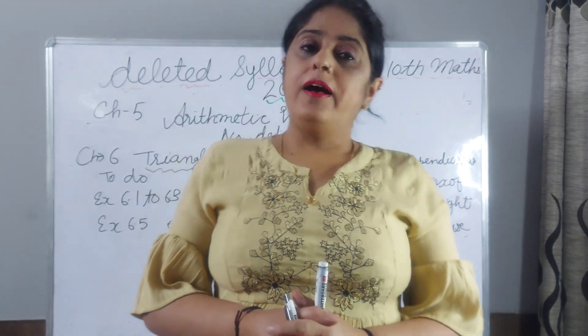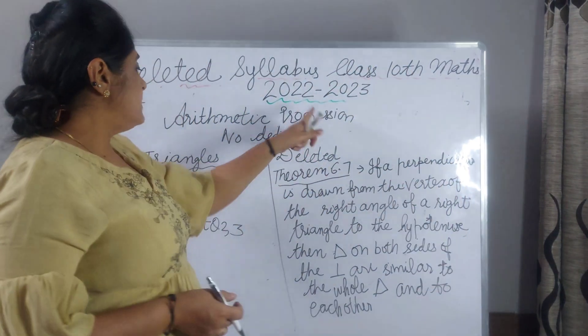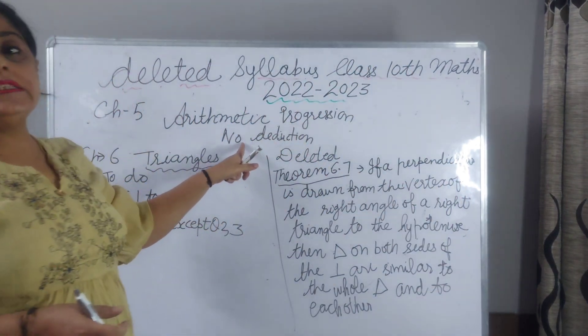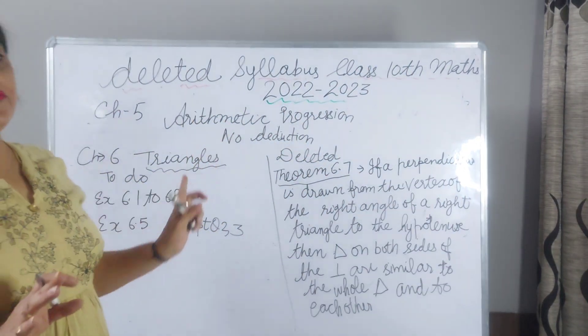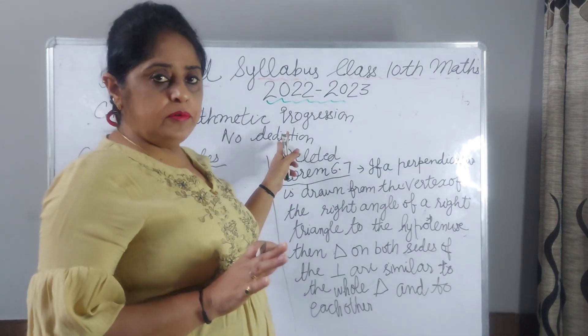Chapter 5: Arithmetic Progression. There is no deduction for this chapter; you have to do the entire chapter.